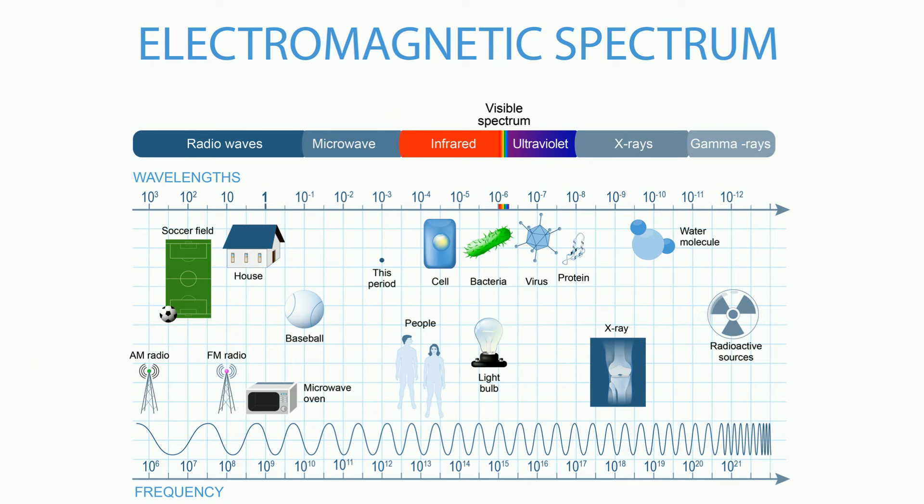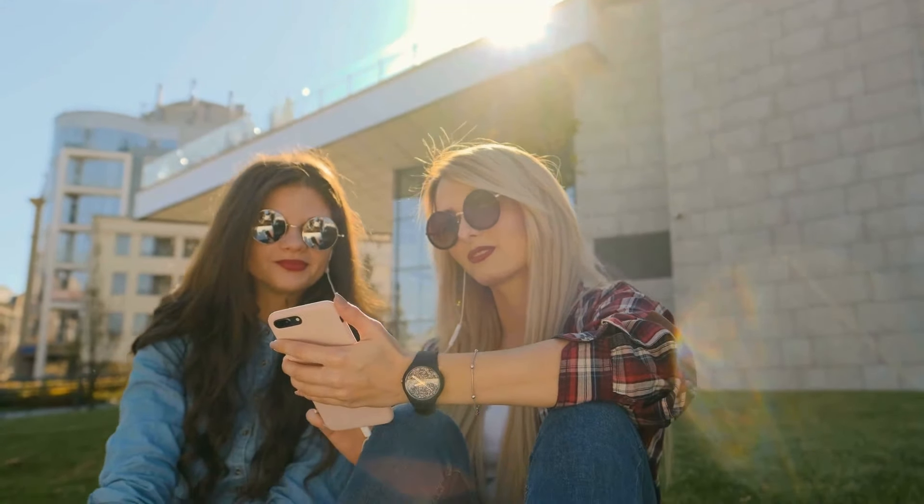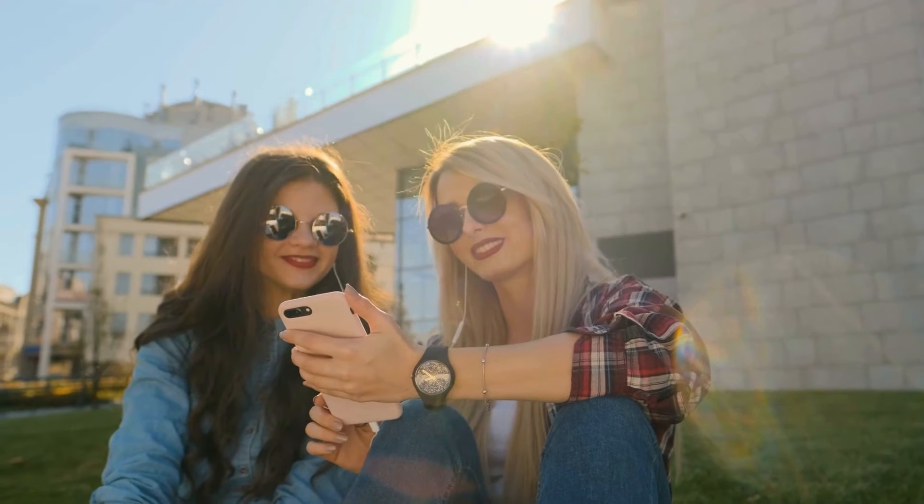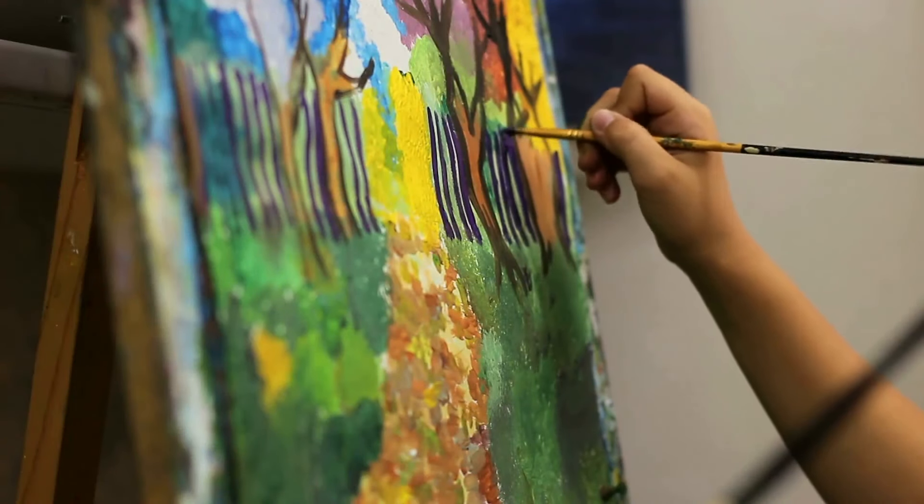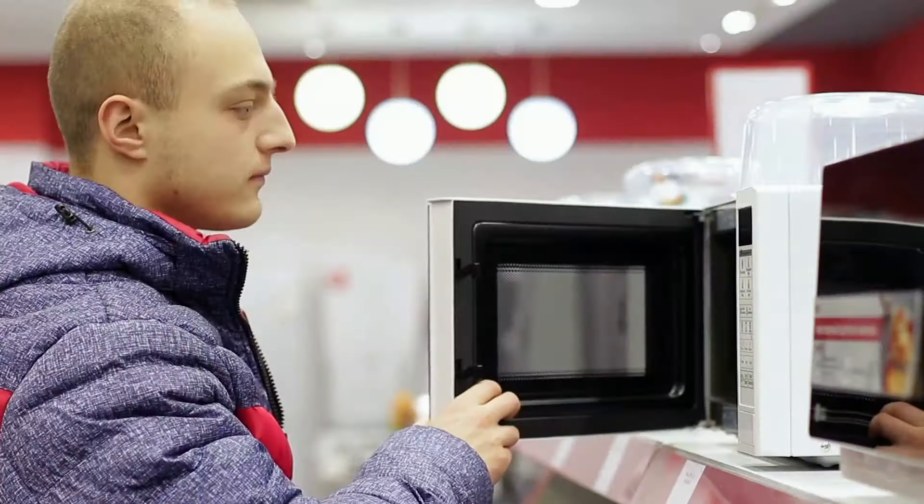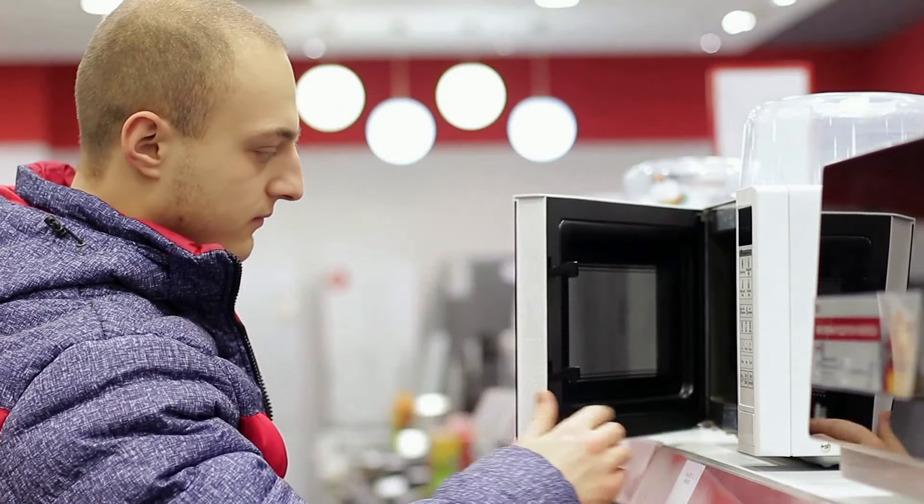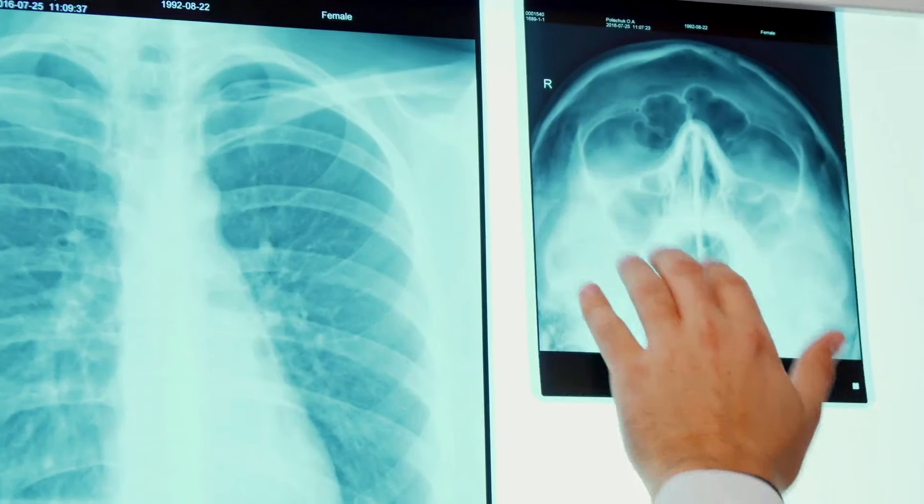The electromagnetic spectrum is used in everyday life, from listening to music, to visible light, to microwave ovens, to even looking inside our bodies.